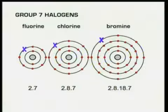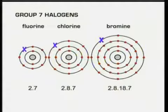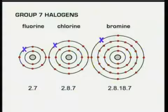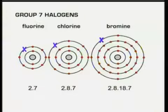But why do the halogens get less reactive as they go down the group? It's because each successive halogen has one more electron shell, which puts the gap for a missing outer electron further away from the positive nucleus. The further away, the weaker the bonding, so it's more difficult to attract an electron from another atom to fill the gap.